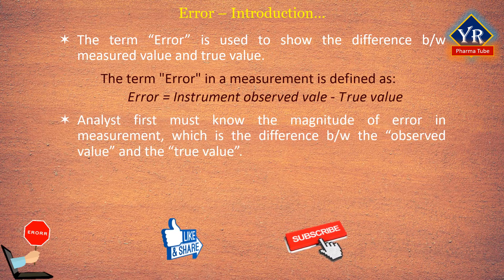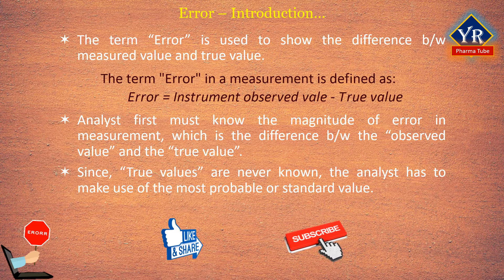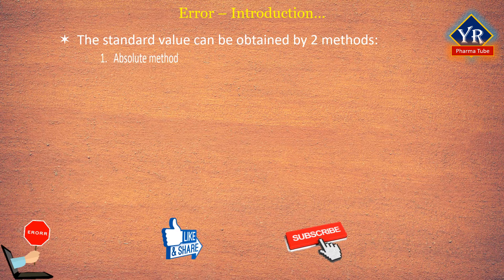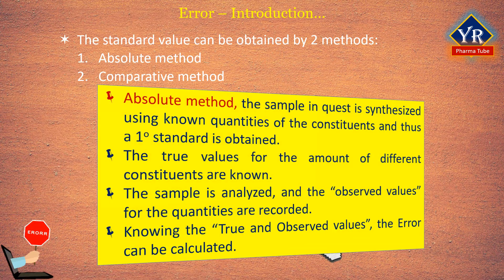To minimize error, one must know the magnitude of error in his measurement, which is the difference between the observed value and the true value. Since true values are never known, one has to make use of the most probable or standard value. The standard value can be obtained by two methods: the absolute method and the comparative method.